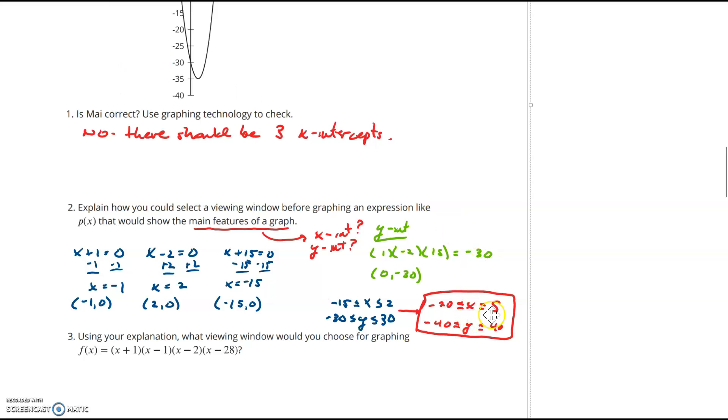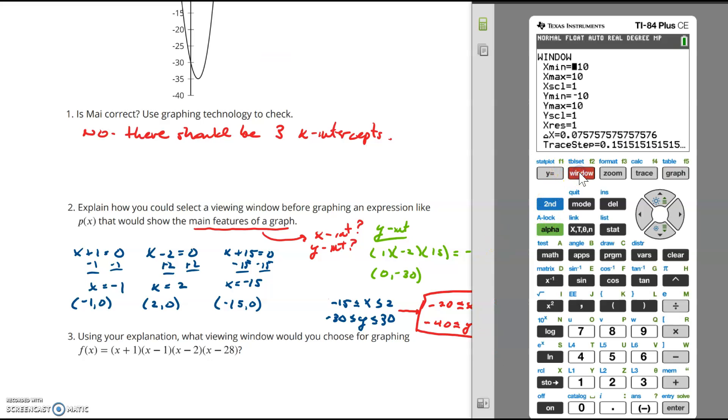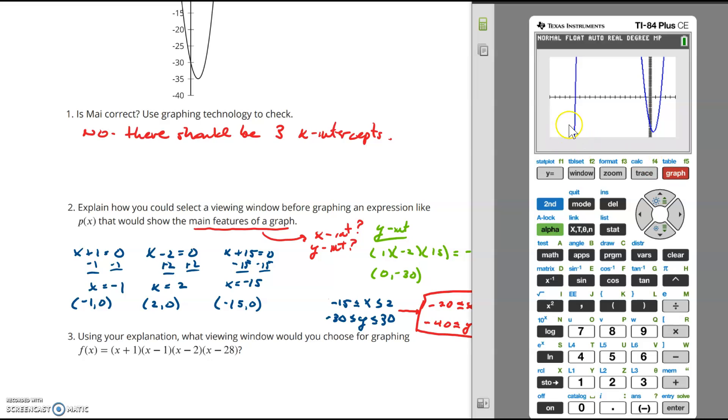On my x-axis, I want to go from negative 20 to positive 5. And I do that by going to the window. My minimum x value, I said I want to go from negative 20. My maximum x value, I said I wanted to go to positive 5. My minimum y value, I said negative 40. And then my positive y value, I said a little bit bigger to positive 40. Now let's see what happens when we hit graph. And when we do that, notice that I see all three of my x-intercepts.